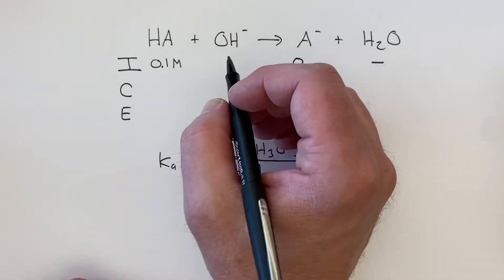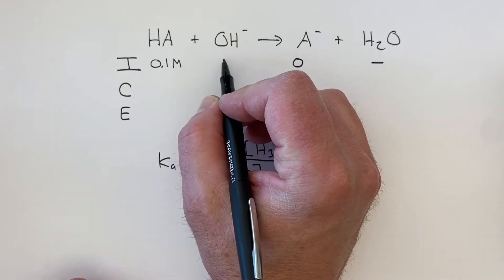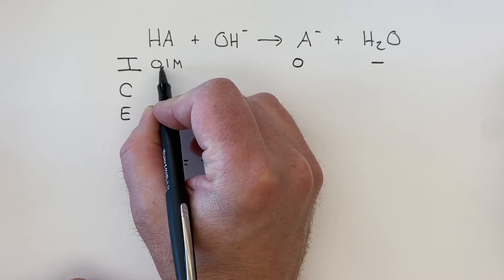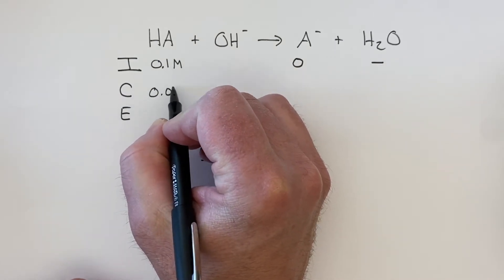So let's say I add enough OH minus so that the concentration of this goes down to half of what it started as. So we start at 0.1, halfway to the equivalence point we've titrated half of our solution and so it is now down to 0.05 moles per liter.